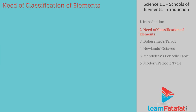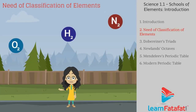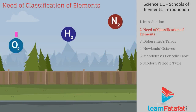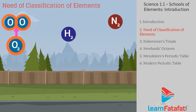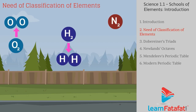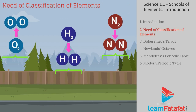In nature, there are a large number of elements. Elements are formed from only one type of atom. For example, Oxygen is an element formed from Oxygen atoms. Similarly, Hydrogen is formed from Hydrogen atoms, and Nitrogen is formed from Nitrogen atoms. For studying the properties of these elements, there is a need to classify them.